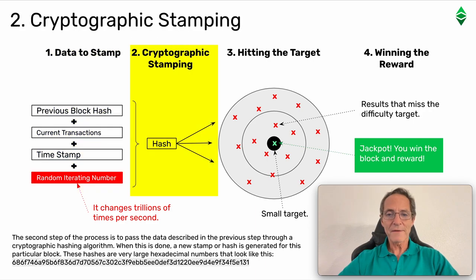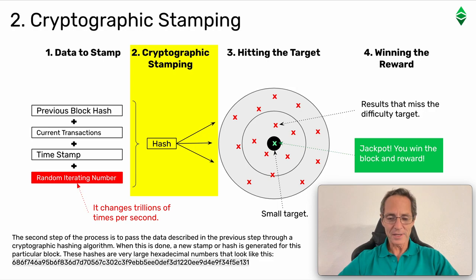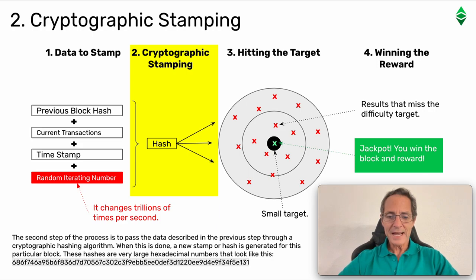Step two: cryptographic stamping. The second step of the process is to pass the data described in the previous step through a cryptographic hashing algorithm. When this is done, a new stamp or hash is generated for this particular block. These hashes are very large hexadecimal numbers.